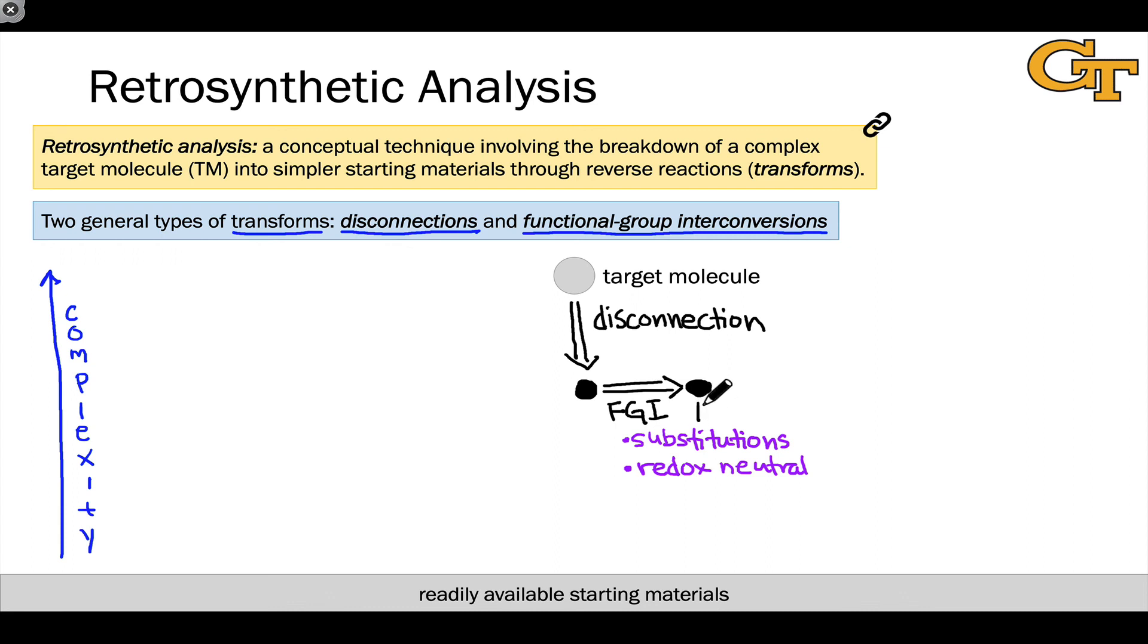Of course, eventually, we'll need enough disconnection transforms to get us back to simple starting materials. And this often takes a large number of disconnections to get us back to a place where we can, say, buy the starting materials from Sigma Aldrich.